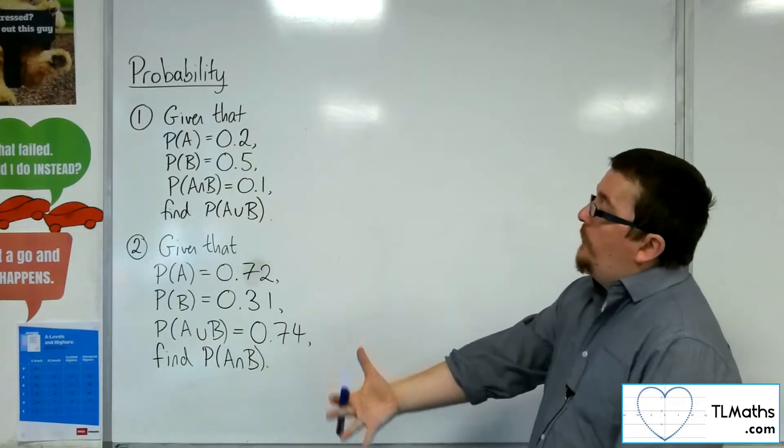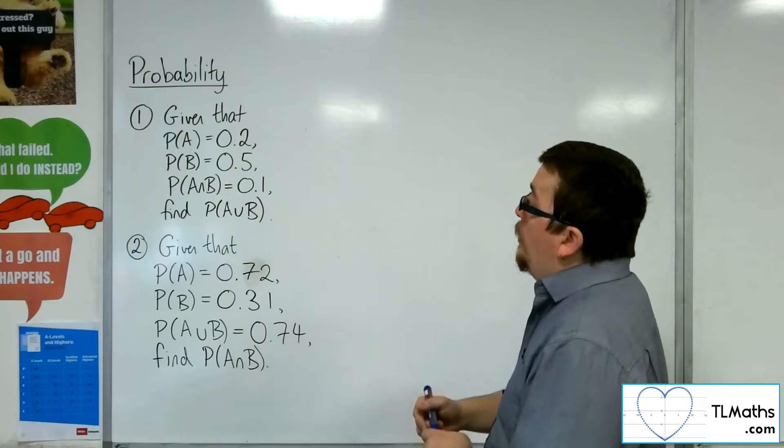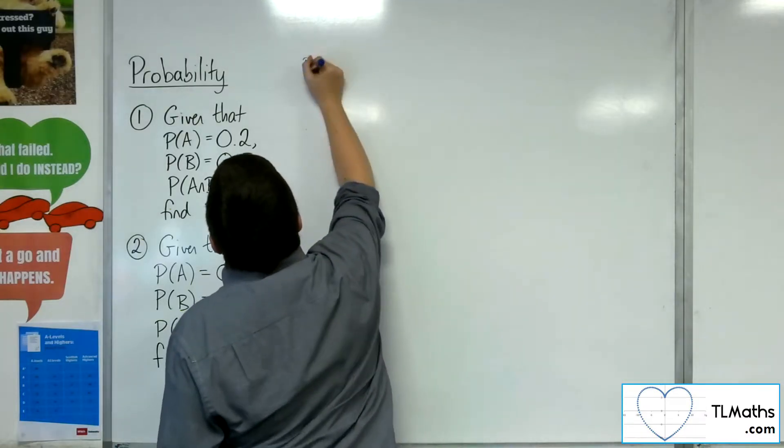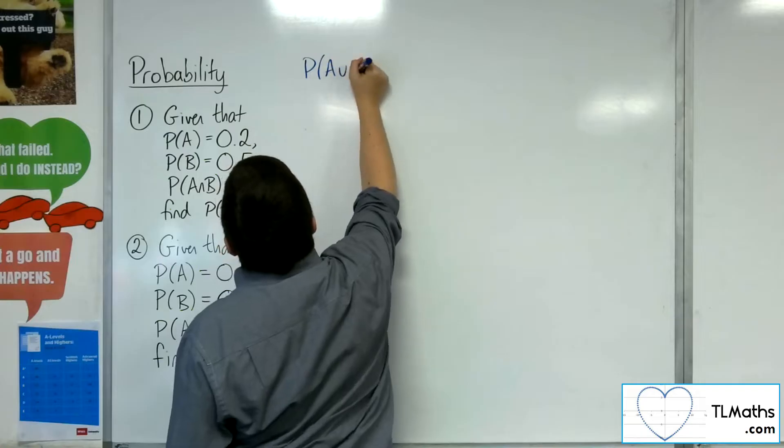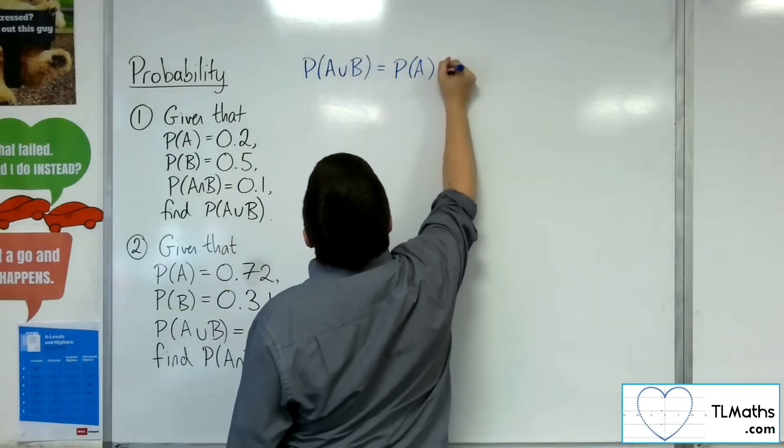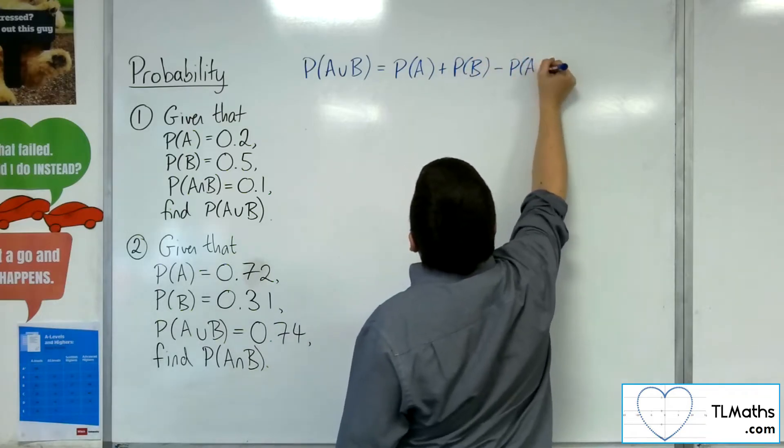And what we really need to do here is utilize the formula that we looked at in the previous video, which was where we said that the probability of A union B is equal to the probability of A plus the probability of B take away the intersection.